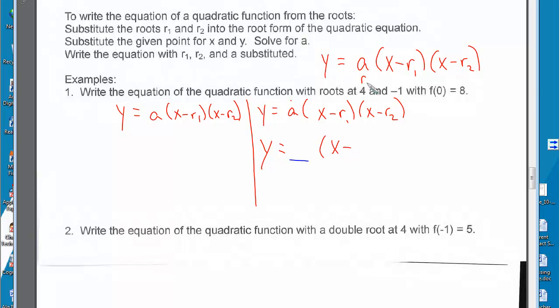Let's look at this with roots of 4 and negative 1. So x minus 4 times x minus negative 1. So this is going to be y equals whatever a is, because I don't know it, times x minus 4 times x plus 1.